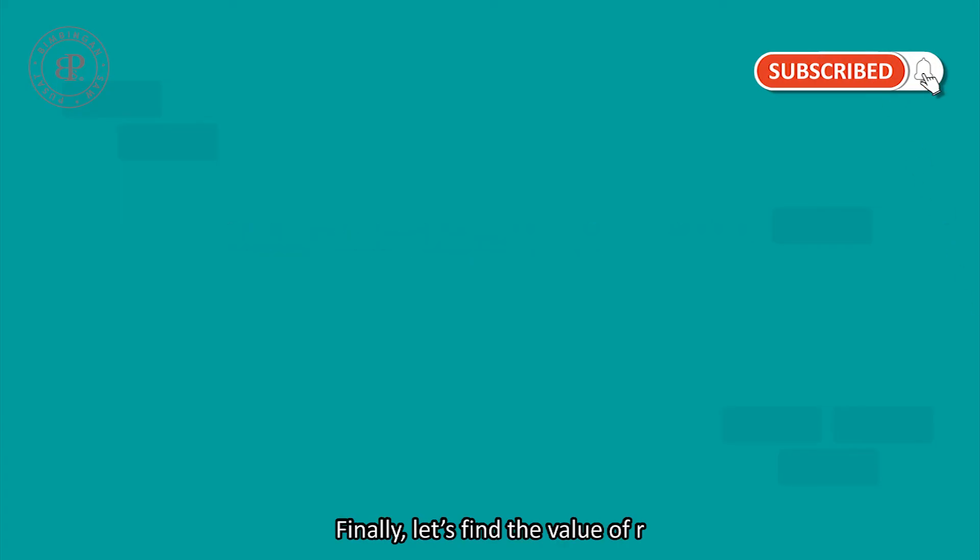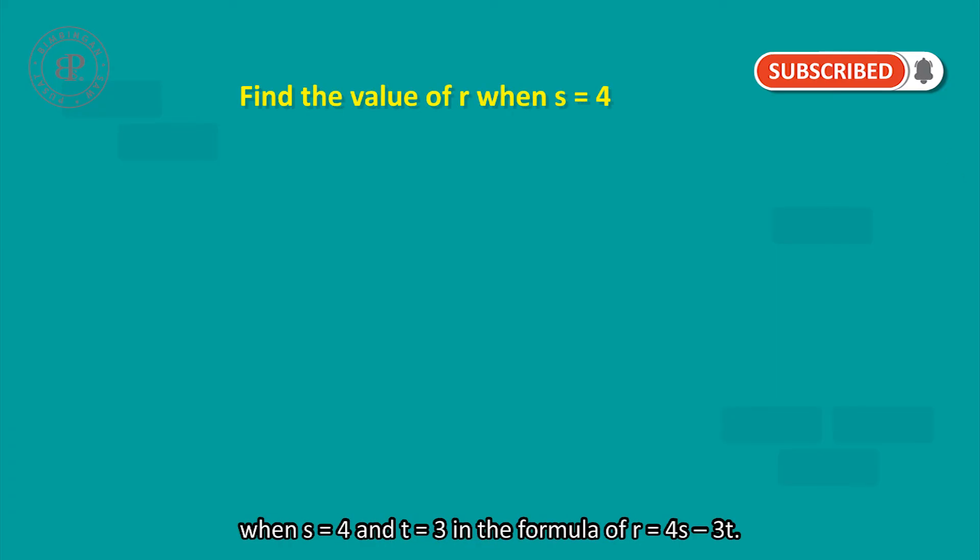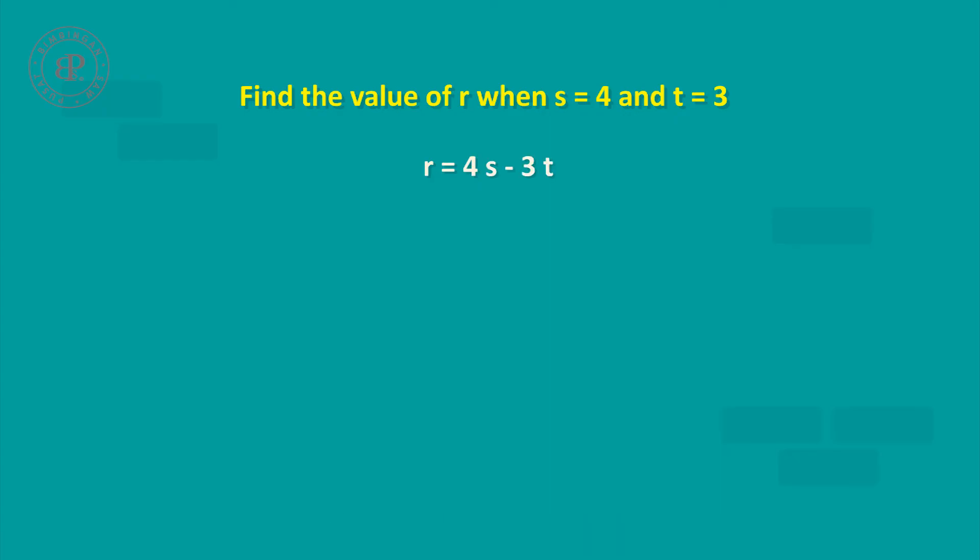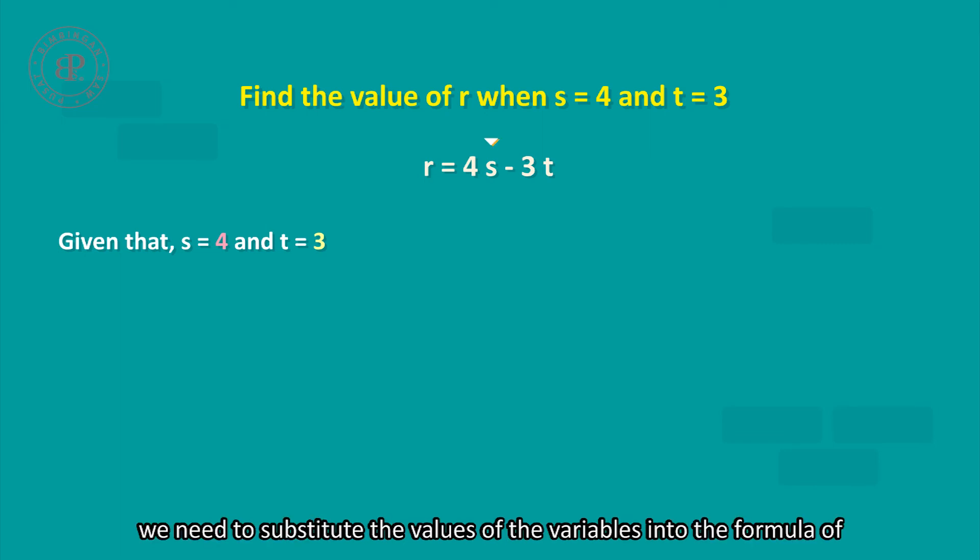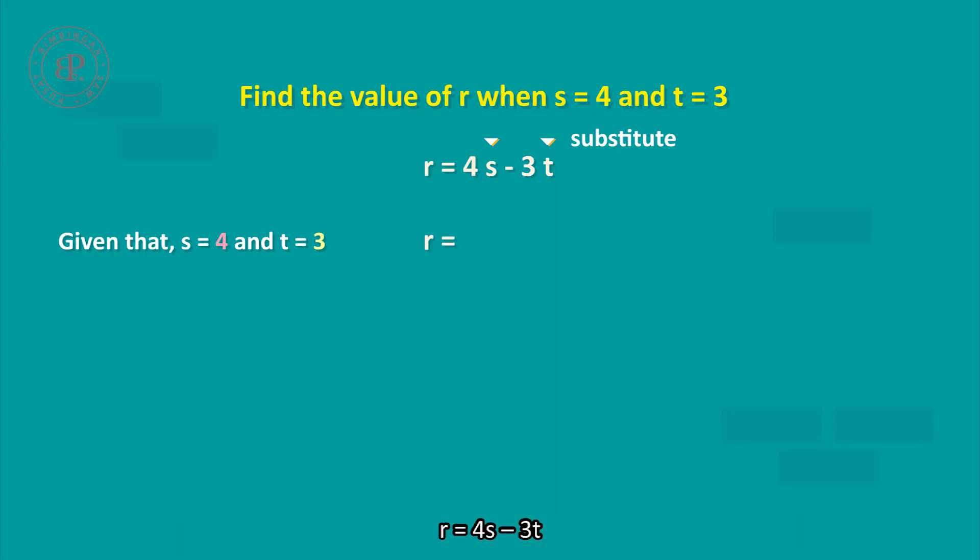Finally, let's find the value of R when S equals 4 and T equals 3. In the formula R equals 4S minus 3T, given that S equals 4 and T equals 3, we need to substitute the values of the variables into the formula.